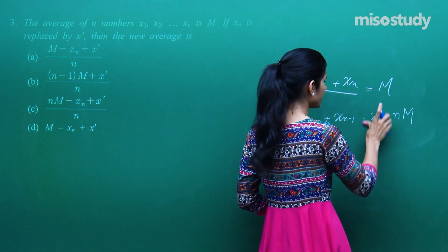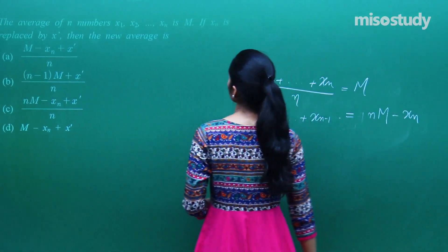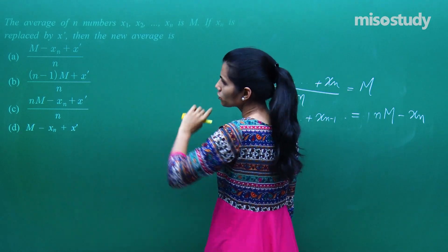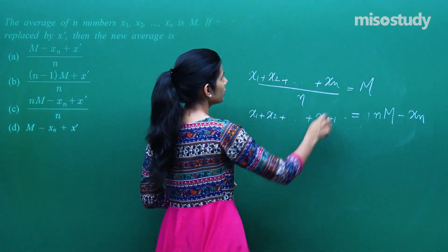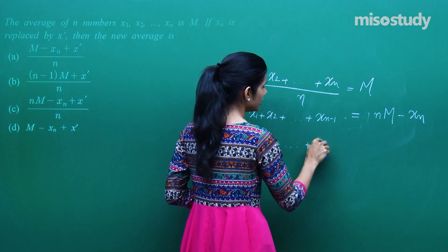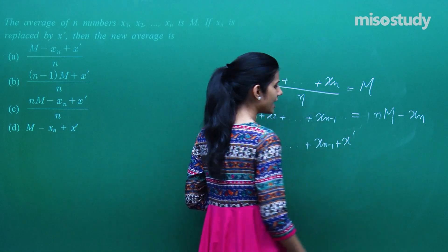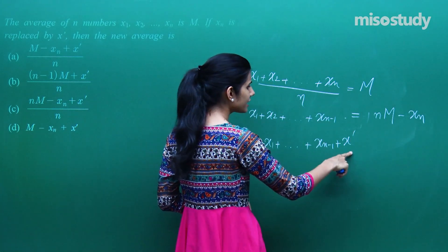xn ko odhar le jao toh minus xn. Ab mujhe bola jaa raha agar xn ko replace karke x dash rakha toh new mean kya banega? xn ko replace karke x dash rakho ge. xn minus 1 tak wahi entries hongi. Ek extra add ho jayegi x dash xn ko hata ke. Toh abhi bhi ye kitni hongi? N entries.